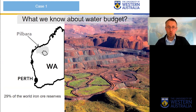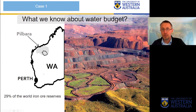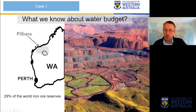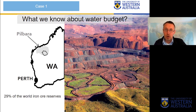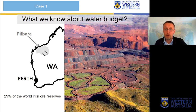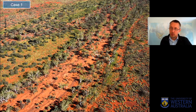Let's go now to two case studies. I'll give you two examples of how this geochemical toolbox can be applied. First, let's go to the Pilbara, where I'll show you results for different types of research in a very arid zone where water is very important for both humans and ecology. This is the Fortescue River shortly after flooding by Cyclone Heidi.